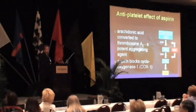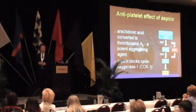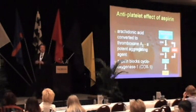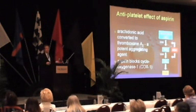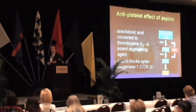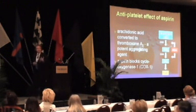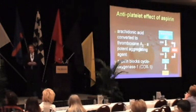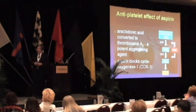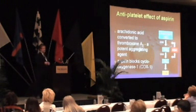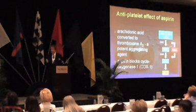Aspirin inhibits a cyclooxygenase-1-dependent process, which is the interconversion of arachidonic acid through cyclic endoperoxide intermediates to thromboxane A2. Thromboxane A2 is a very potent initiator of platelet aggregation. The COX-1 enzyme becomes irreversibly acetylated by aspirin, and that particular pathway is blocked.